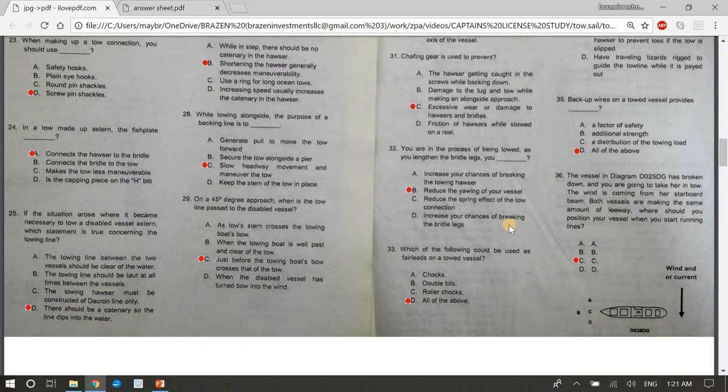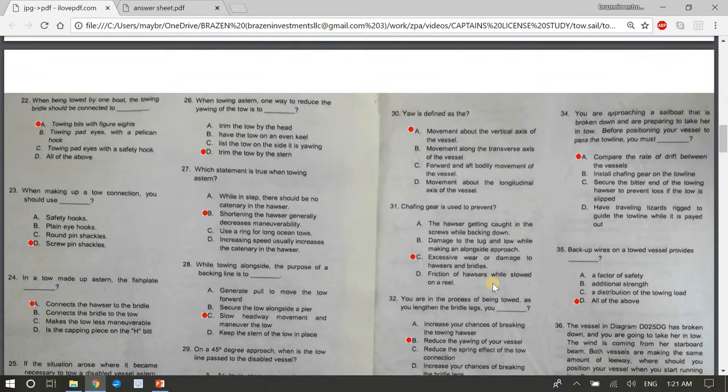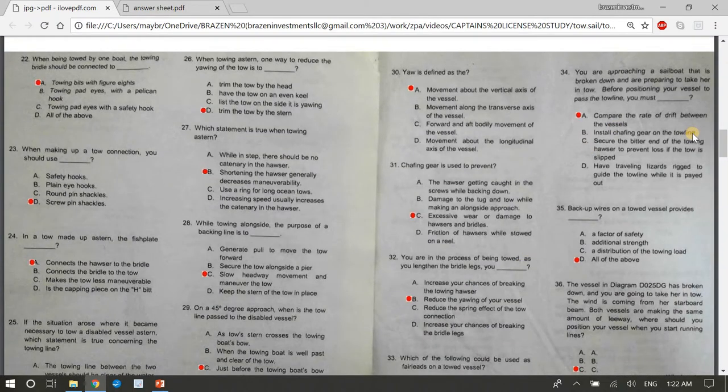32, you are in the process of being towed. As you lengthen the bridle legs, you blank. The answer is B, reduce the yawing of your vessel. 33, which of the following could be used as fair leads on a towed vessel? Shocks, double bits, roller chocks? The answer is D, all of the above. 34, you are approaching a sailboat that is broken down and are preparing to take her in tow. Before positioning your vessel to pass the tow line, you must blank. The answer is A, compare the rate of drift between the vessels.